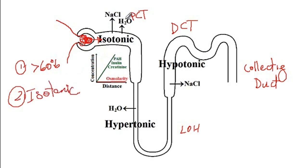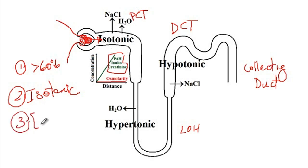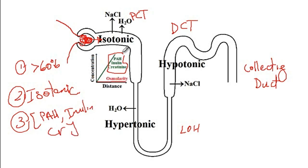However, because there is less water in the urine but the number of molecules of inulin, para-aminohippuric acid (PAH), or creatinine has not changed, we have the same number of molecules of these agents but less water — therefore the concentration of PAH, inulin, and creatinine increases along the proximal convoluted tubule. Osmolarity remains the same, but since there is less water relative to molecules of PAH, inulin, or creatinine, their concentration increases.